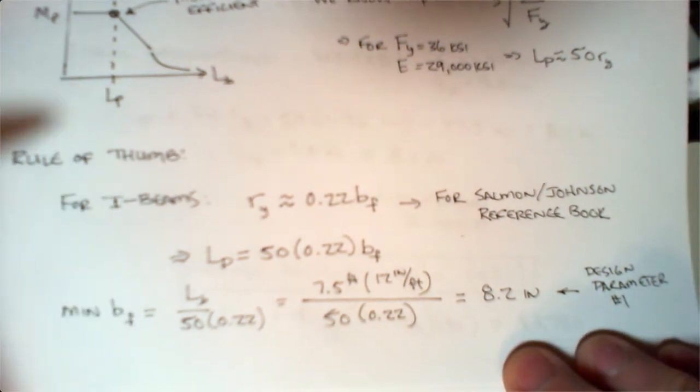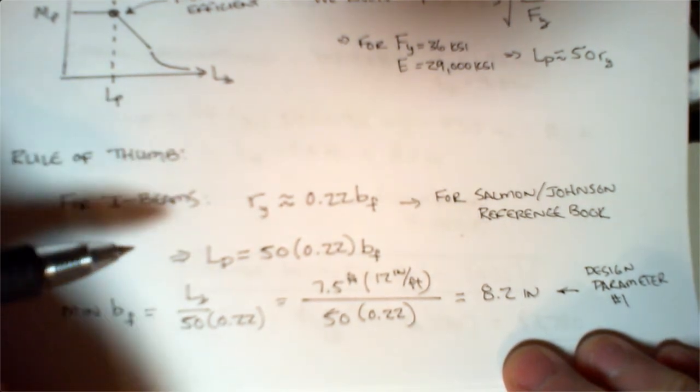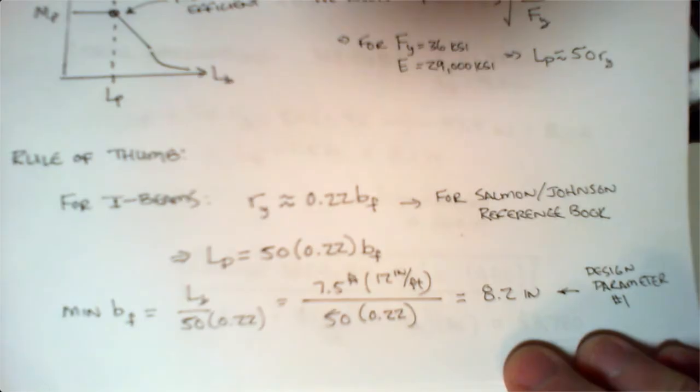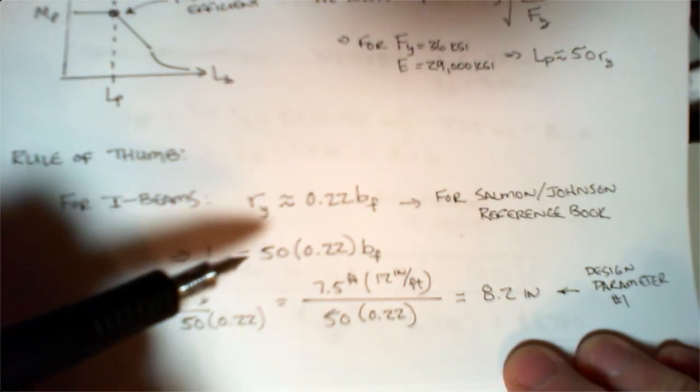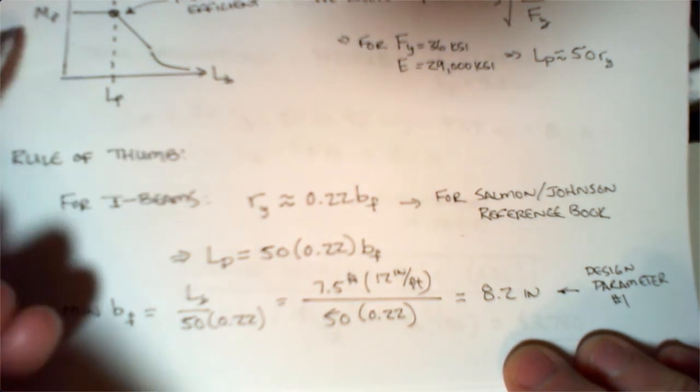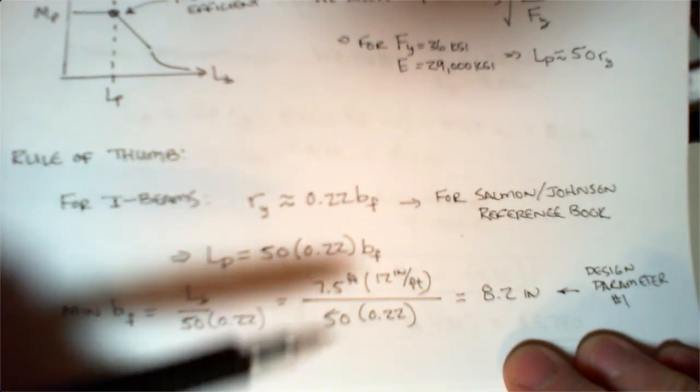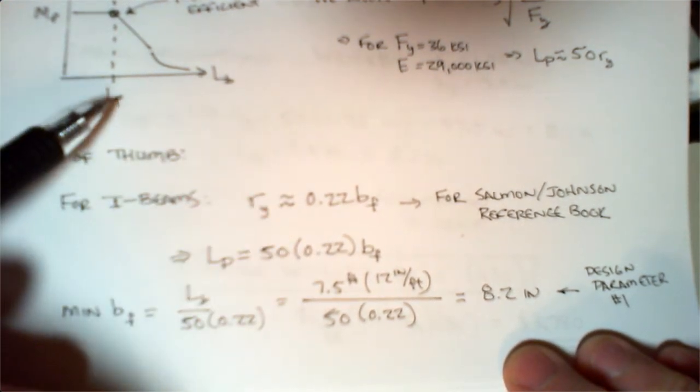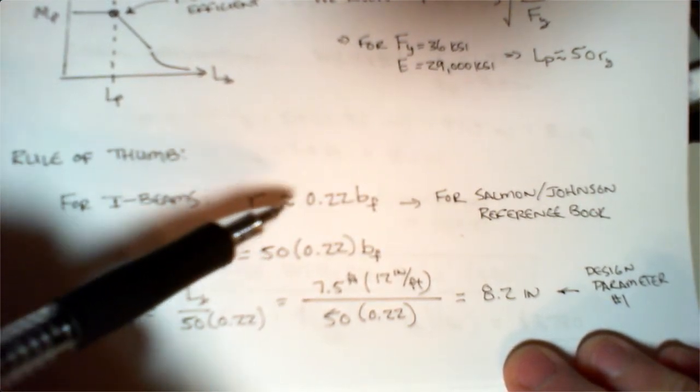Here's an interesting rule of thumb: based on experience and some other references, for I-beams our ry is often in the range of about 20% of bf. Since we're going to have two design parameters that show up, I'll have the Zx value that will show up when I do Mp here.